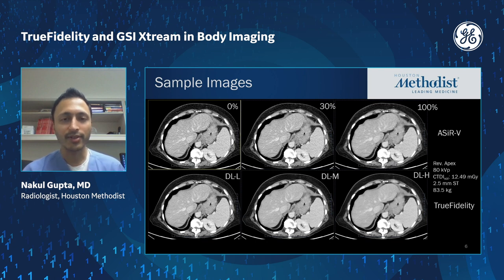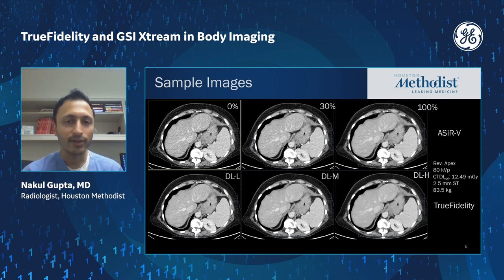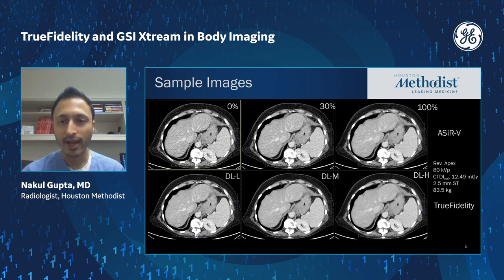Here are some sample images. The top row is reconstructed with ACER-V at 0%, 30%, and 100%, and the bottom row is true fidelity at low, medium, and high strength. You can see across the board that the deep learning reconstruction images from true fidelity have a much more natural noise texture than the higher strength ACER-V images and tend to have lower noise levels overall.